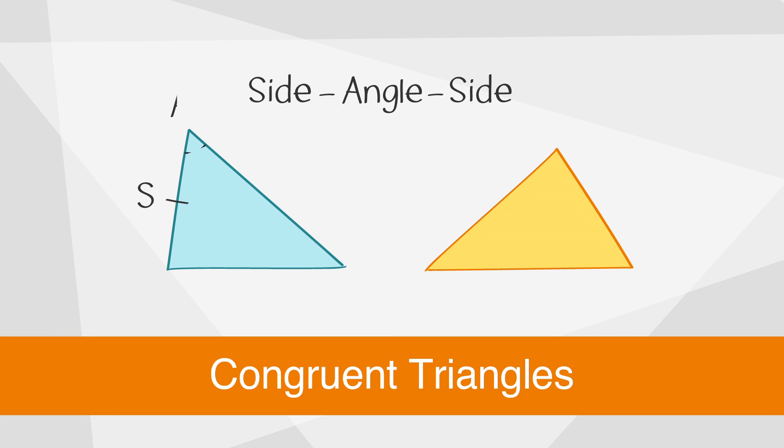Next we have side angle side. This means that if two sides of one triangle and the angle formed by the sides being used are congruent to the corresponding parts of another triangle the triangles are congruent.